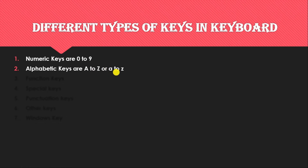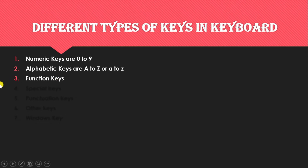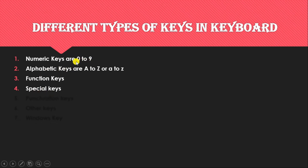Next is the function key. Function keys are F1 to F12 — don't worry, I will show you in a further slide. Third key is the function key. Next one is the special key, which is called a special purpose key. Keys 0 to 9 are considered numeric keys because we use them for typing numbers.